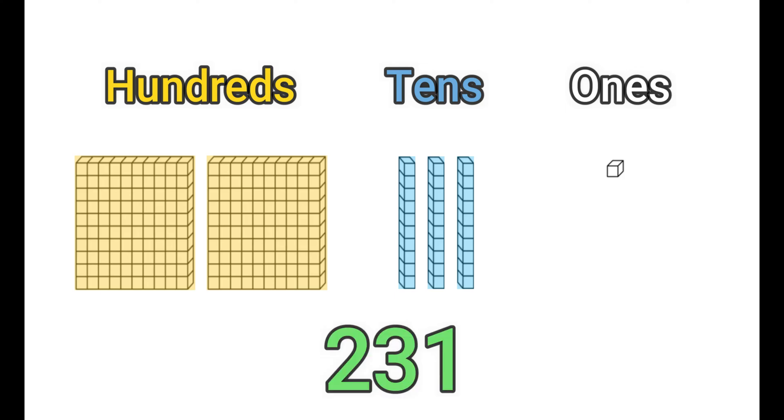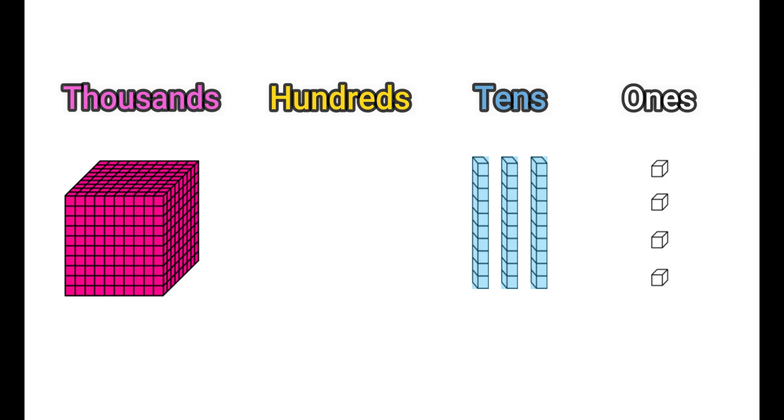The place value blocks right here are showing 231. The place value blocks right here are showing 1,034. You have to be very careful when solving problems like these that have a zero. There are no place value blocks that represent hundreds. So when you're writing it in standard form you have to make sure to write a zero.